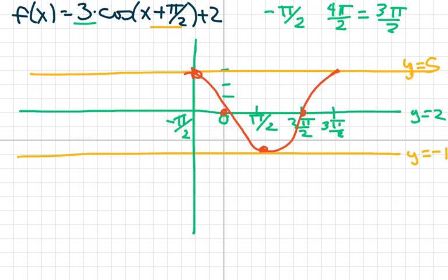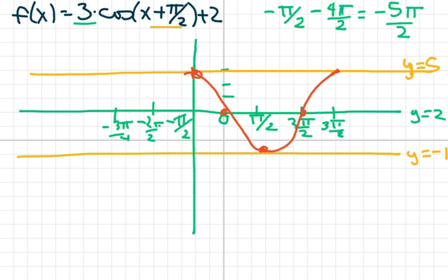Now I want to subtract and go on the other side, so I subtract here and we get negative 5π/2. So we're starting at negative 2π/2 — this would be negative 2π/2 — then negative 3π/2, negative 4π/2, and negative 5π/2. This is not drawn to scale. Then you just draw your dots — your characteristic curve — and connect the dots.